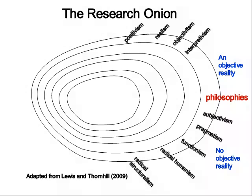The next layer of our research onion concerns whether we adopt a deductive or inductive approach. A deductive approach is based on a positivist perspective — since there is an objective reality that can be measured, we can predict an outcome of an intervention by establishing a hypothesis to be tested, and that's how we approach gaining knowledge about the phenomenon under investigation.